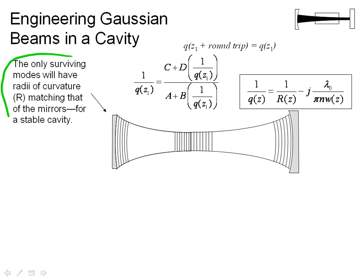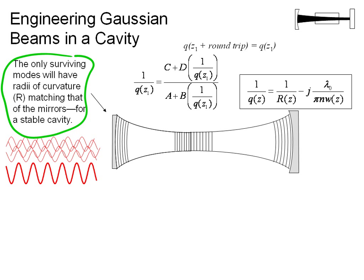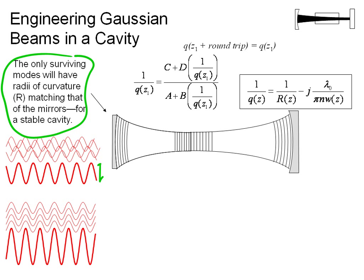We remember that the only surviving modes are going to have radii of curvature that match the mirrors. This is because if after one round trip the modes add up out of phase, the overall amplitude of the beam is going to be much smaller than if all the modes add up in phase.